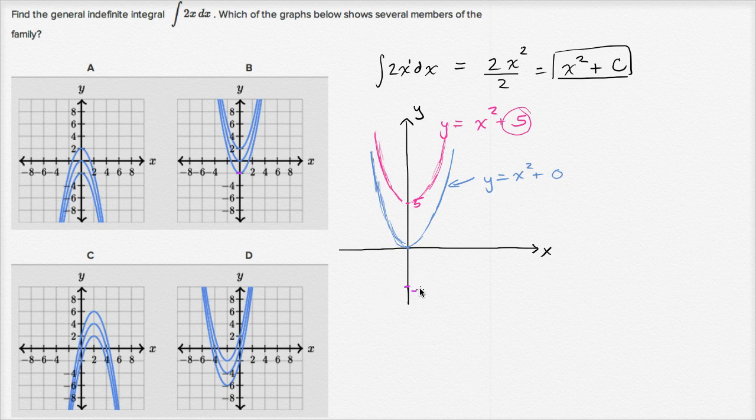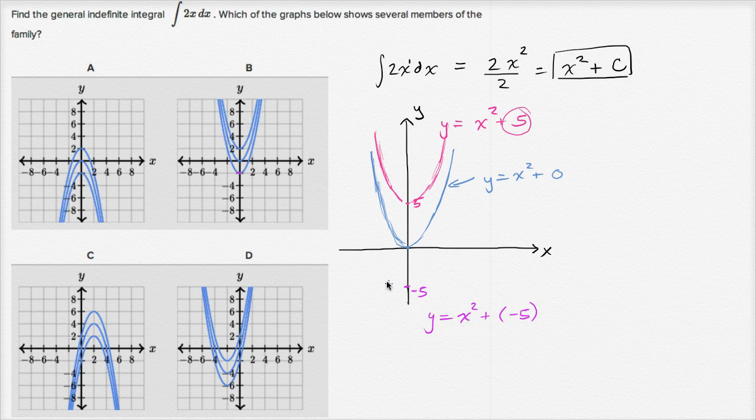So c could also be negative five. So if we wanted to do y is equal to x squared plus negative five, which is really x squared minus five, then the graph would look like this. It would shift x squared down, down by five. So this one is shifted up by five, this one is shifted down by five.